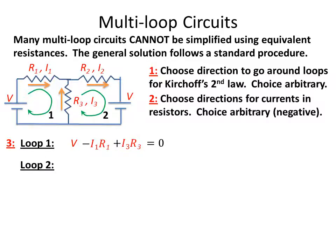Loop 2, the one on the right, has a minus voltage because you're going from the positive to the negative side of the voltage, so we write it as minus V as our voltage source. Then we will be going across R3.